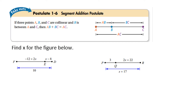The Segment Addition Postulate states that if three points A, B, and C are collinear — meaning they all lie on the same line — and B is between them, then AB plus BC equals the length of AC. So the sum of the parts is equivalent to the whole. Looking at the figure on the left, FE plus ED equals the length of FD.